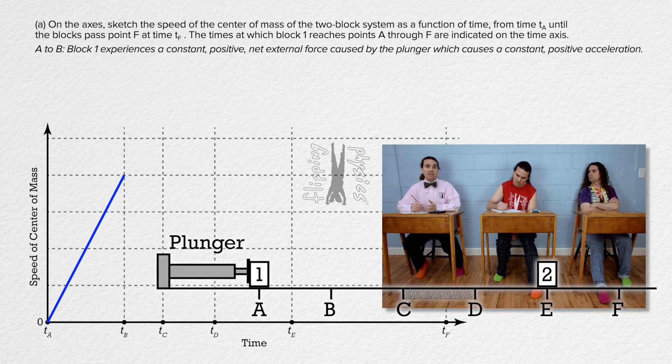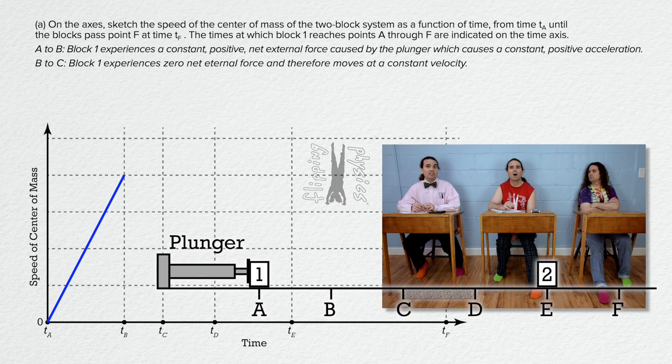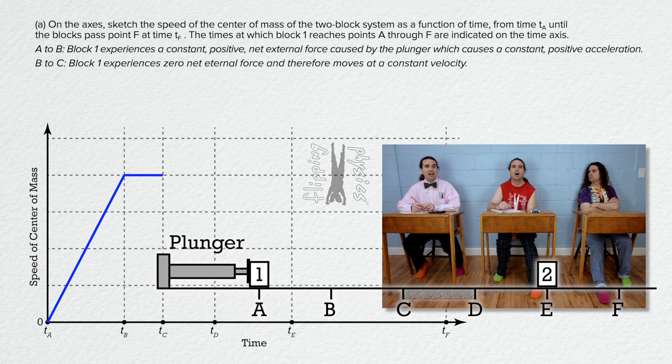As it goes from B to C, block 1 experiences zero net external force because there is no friction and the plunger is no longer pushing on it. Therefore block 1 moves at a constant velocity, so from time B to time C, starting where the previous line ended, draw a horizontal line.